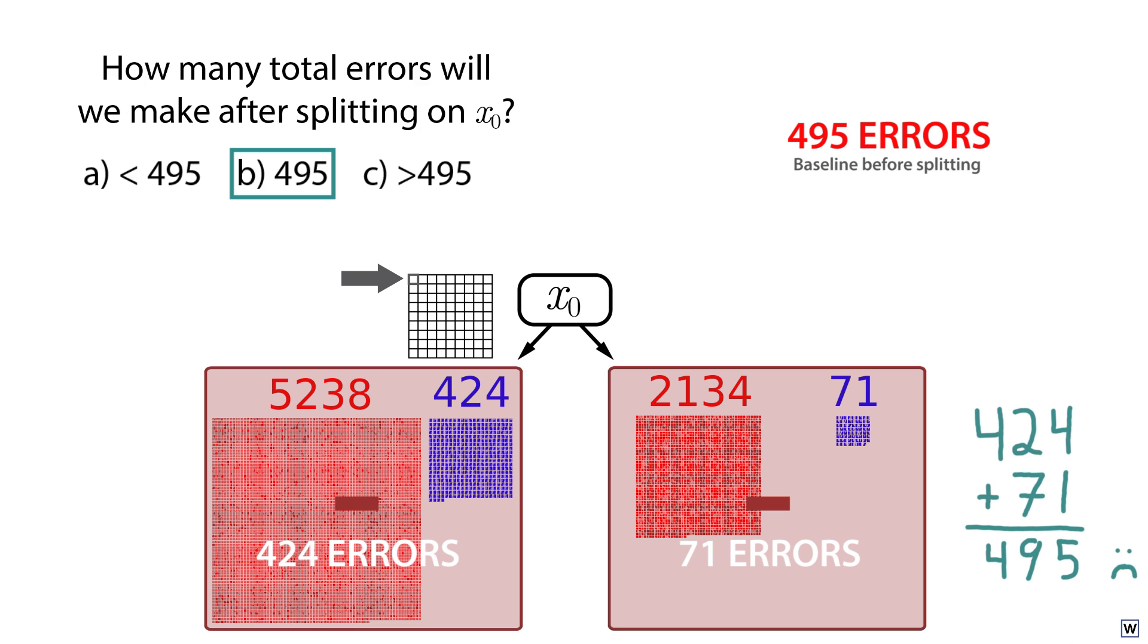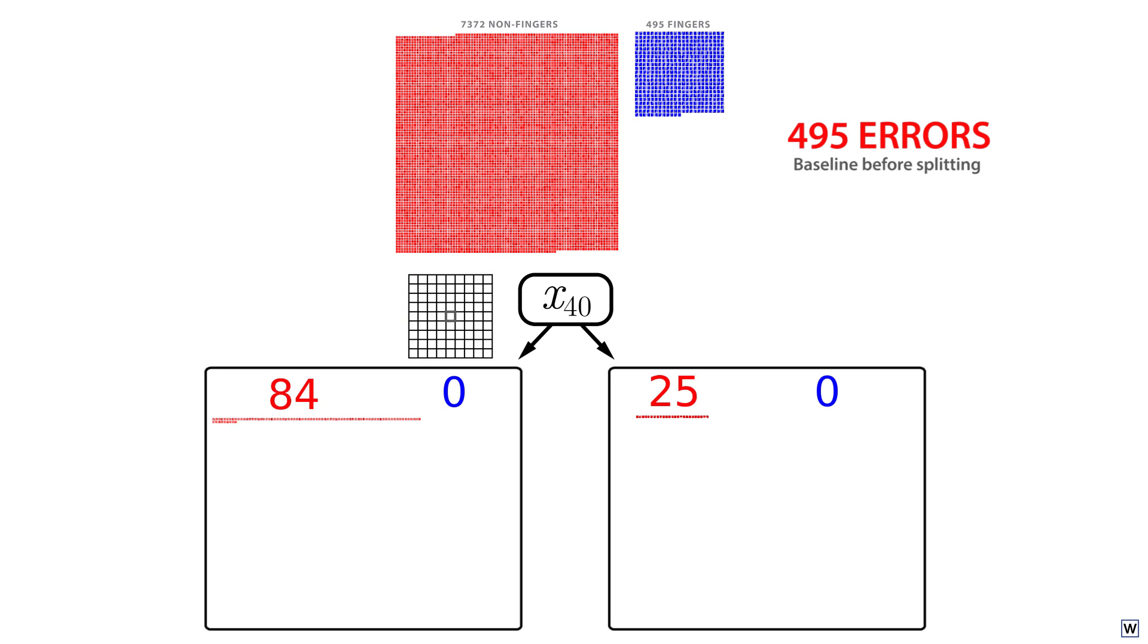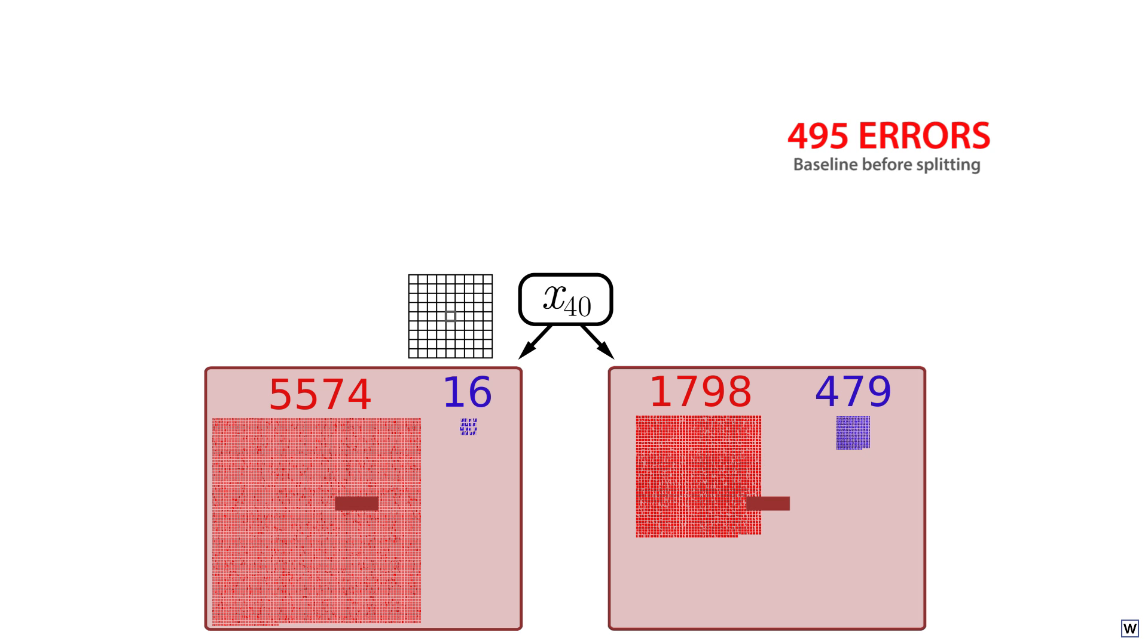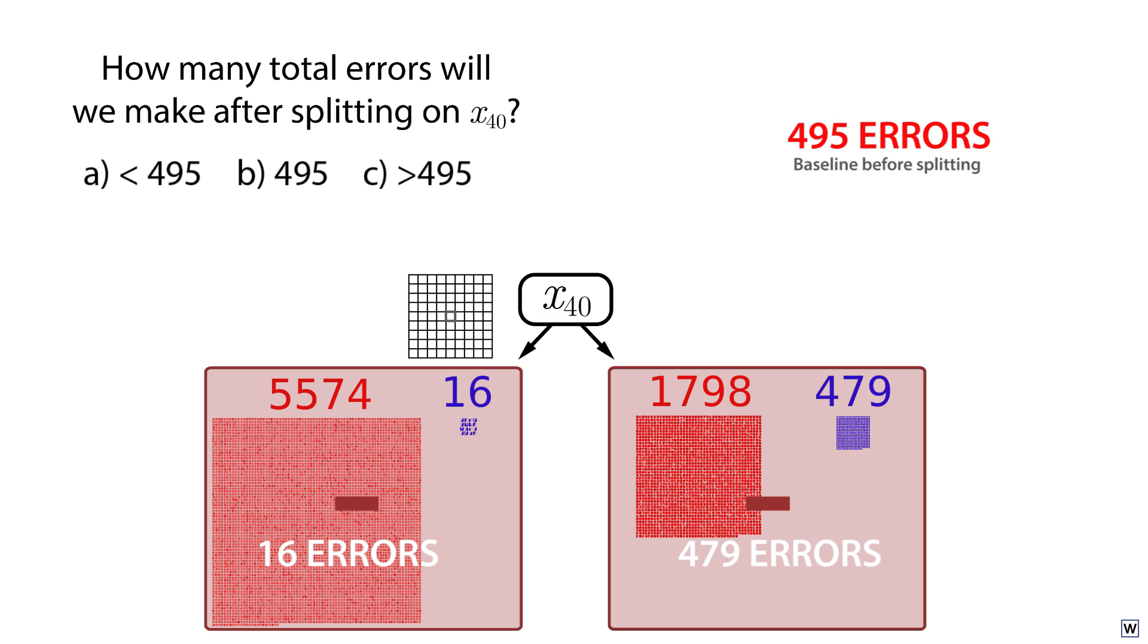But of course, this could be a result of our choice of pixel. Perhaps splitting on x0 is not the way to go. Now what about splitting on our central variable x40? Once again, both nodes contain a majority of negative examples, meaning we misclassify all positive examples, resulting in a total of, you guessed it, 495 misclassification errors.